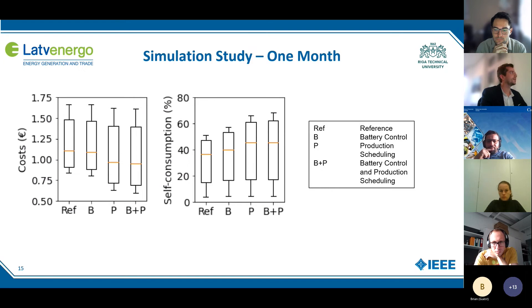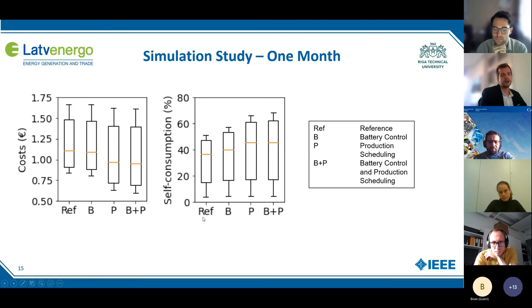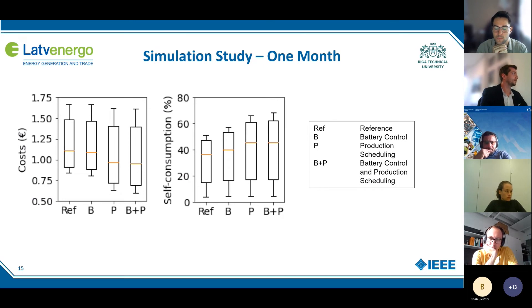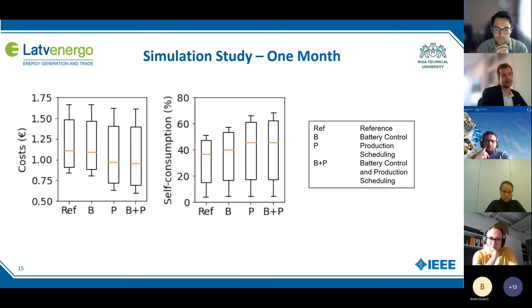Let's talk about the results. Here we can see the results of the simulation study for one month using spot market prices. On the left we can always see the reference case, where the production starts as soon as the production order list arrives. There we can see a clear mismatch between production and energy supply, resulting in low self-consumption. The next case is optimal battery control. We can see that with optimal battery control, the costs aren't really better than the reference case. This is due to the high investment and degradation costs of the battery, and also these are calculated with electricity prices from last year, so this year it would look different.